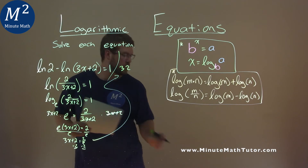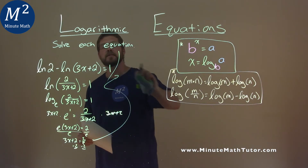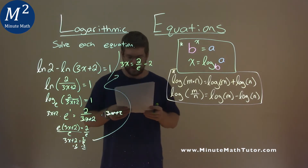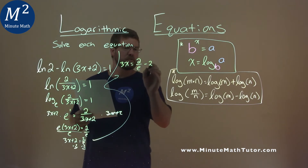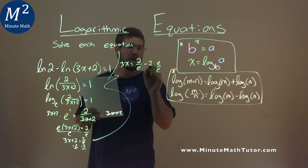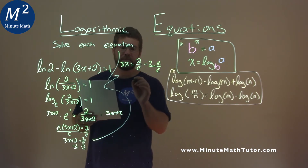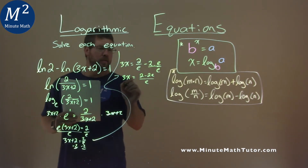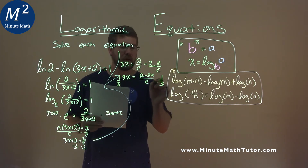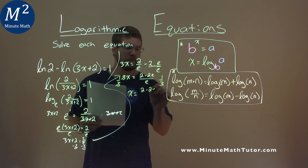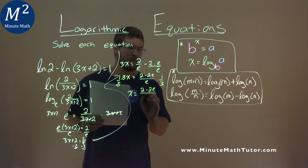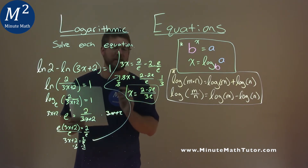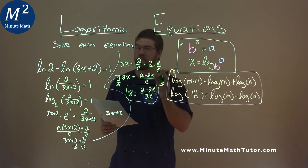So we have 3x equals 2 over e minus 2. To combine these, I multiply the 2 by e over e, so it's minus 2e over e. We now have 3x equals 2 minus 2e over e. We're going to multiply by one-third to both sides — that cancels the 3. X is by itself: we have 2 minus 2e in the numerator and e times 3 is 3e. Our final answer is x equals 2 minus 2e over 3e.